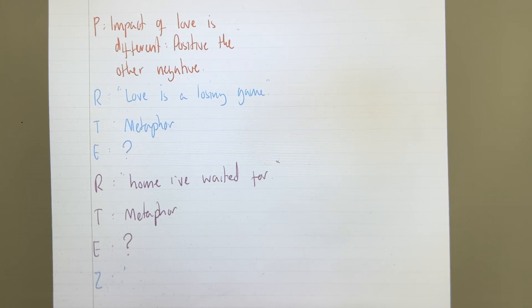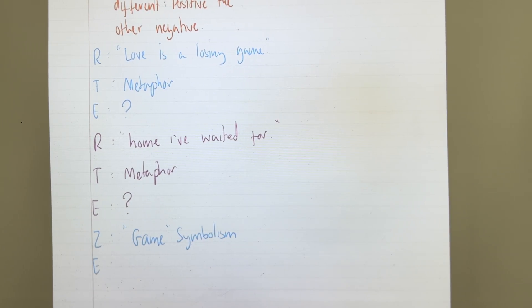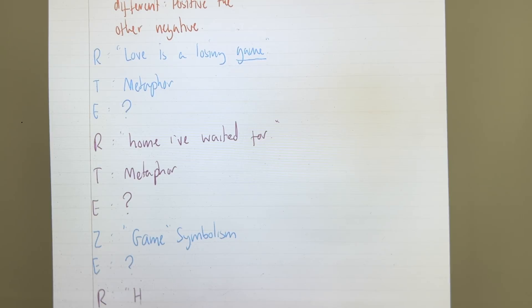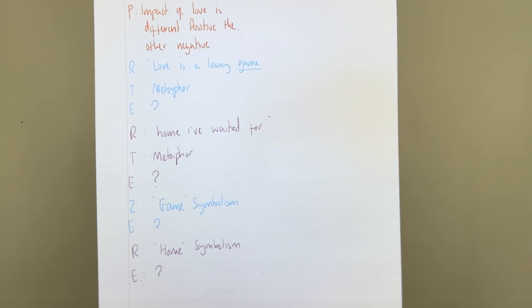In poem one I'm going to zoom into the word 'game' and talk about the technique of symbolism — what a game symbolizes. Then in poem two, I'll zoom into the word 'home' and talk about the symbolism of what a home represents. And there you have one complete paragraph planned.